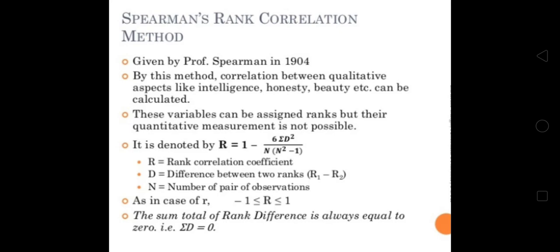Professor Spearman rank correlation is another method. Professor Spearman in 1904 has given the concept that we can measure the correlation: r = 1 - (6Σd²) / (n(n² - 1)).